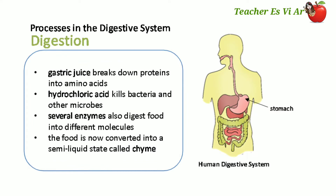In the stomach, the food will be bathed with gastric juice. The gastric juice breaks down proteins into amino acids. Hydrochloric acid kills bacteria and other microbes. Several enzymes also digest food into different molecules. The food is now converted into a semi-liquid state called chyme.